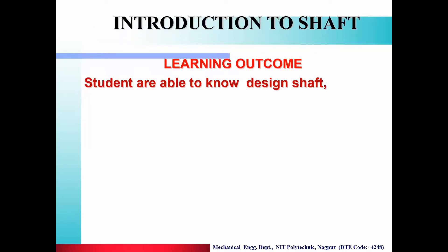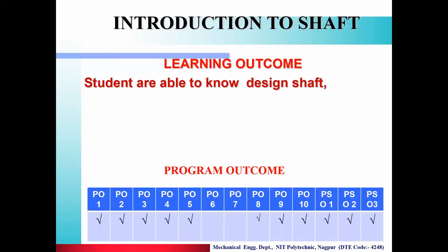The learning outcomes of today's lecture are: students are able to design a shaft. The various program outcomes achieved in today's lecture are PO1 to PO5, PO8, PO9, PO10, PSO1, PSO2, and PSO3. These are the program specific outcomes achieved.